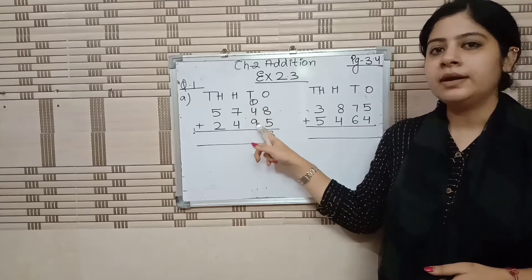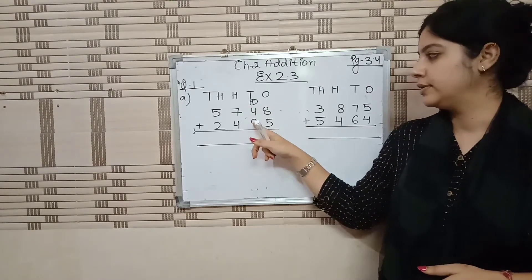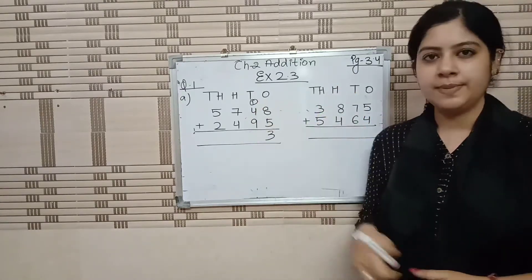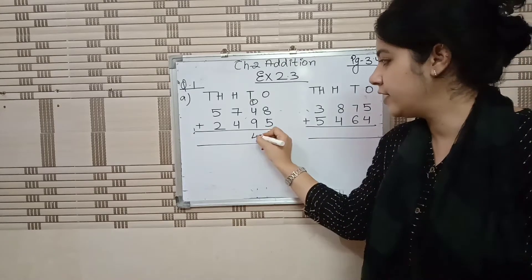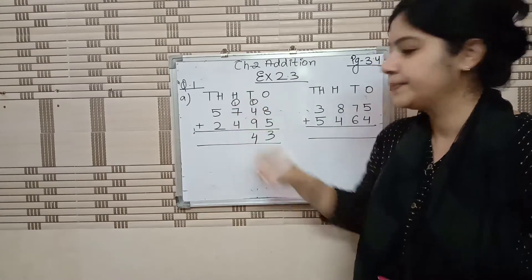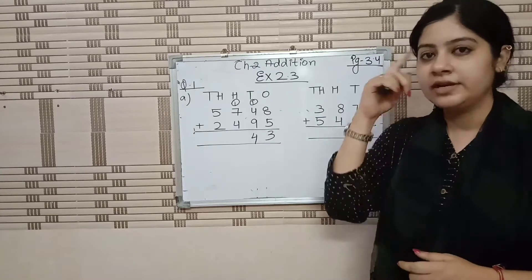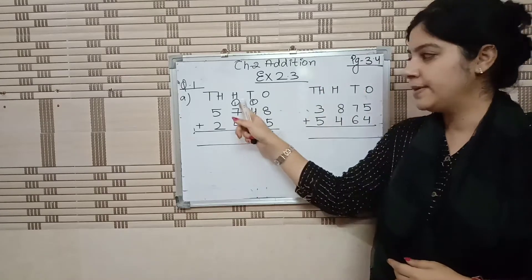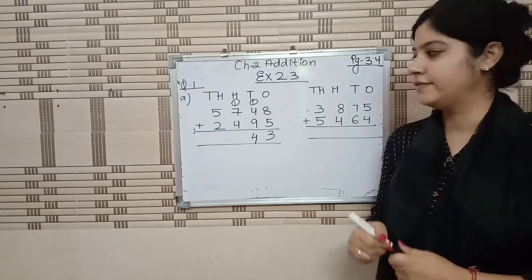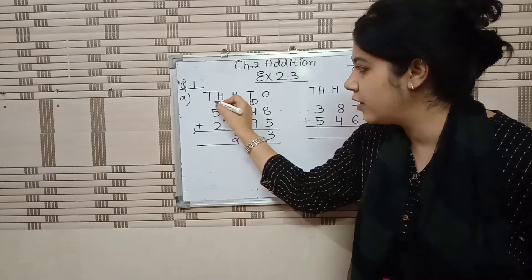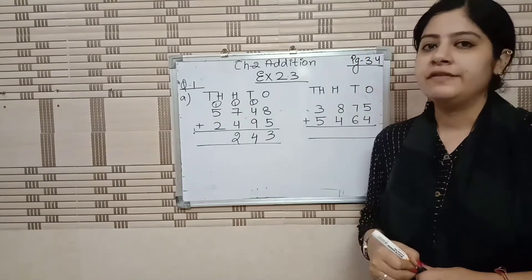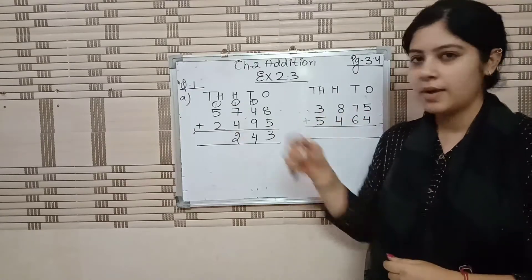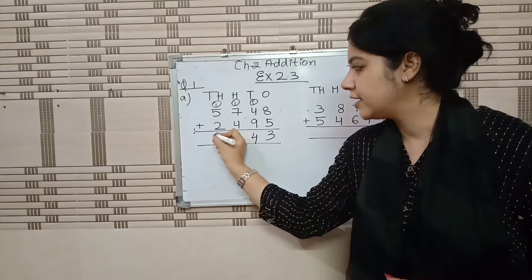Then add the given number and then add the carry. 9 plus 4 — after 9: 10, 11, 12, 13. And 13 plus 1 is 14. So 4 over here and 1 carry forward. Again add the given number — 7 in our mind, 4 on our finger: 8, 9, 10, 11. 11 plus 1 is 12. So 2 over here and 1 carry forward. 5 in our mind, 2 on our finger — after 5: 6, 7. And 7 plus 1 is 8. Answer is 8.